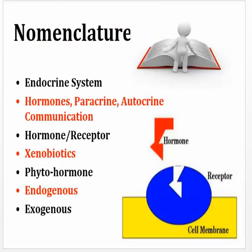Before we move forward, I want to define some simple nomenclature because we'll be using these terms throughout the rest of this presentation. The endocrine system refers to all the glands of the human body — such as the thyroid, the pancreas, the ovaries, the uterus, and the testes — that produce specific chemicals called hormones. In general, there are three different types of communication in the human body.